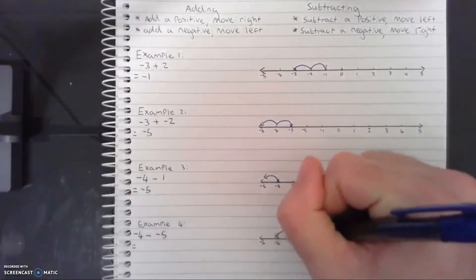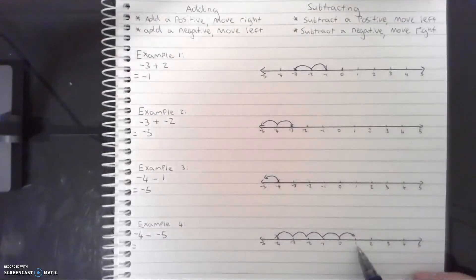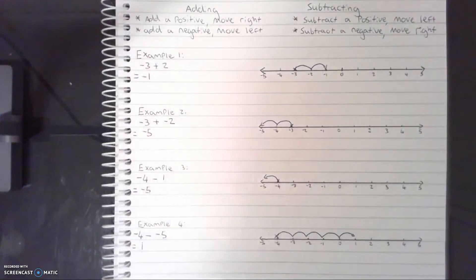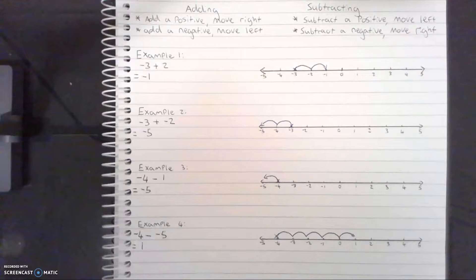Our third example: negative 4 minus positive 1. We put in our starting number, which is negative 4. We are subtracting, so we look at our rules for subtracting. When subtracting a positive — and we know it is because there's no negative symbol — we move to the left. We move left one spot, which gives us negative 5.